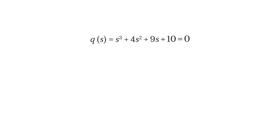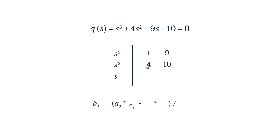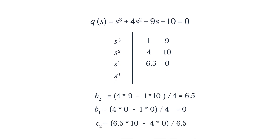The first two rows are straightforward. The highest power is 3, so a₃ = 1 and a₂ = 4 go in the first column of the first two rows. a₁ and a₀ go in the second column. For the third row, we calculate b₂: that's (a₂ × a₁ − a₃ × a₀) / a₂ = (4 × 9 − 1 × 10) / 4 = 6.5. We also check b₁, which gives (4 × 0 − 1 × 0) / 4 = 0, so it won't affect the next equation. Finally, c₂ = (6.5 × 10 − 4 × 0) / 6.5 = 10. We have now successfully completed our array.